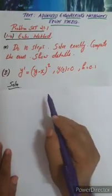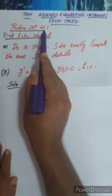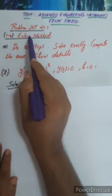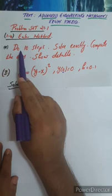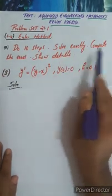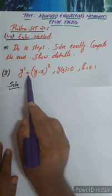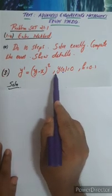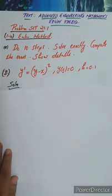In this video, we discuss a problem from the textbook Advanced Engineering Mathematics by Irwin Krasik. Problem set 21.1 by the Euler method. We have to do question 10 steps, solve exactly, compute the error, and show the details. I am doing the third problem: y' = (y - x)², y(0) = 0, h = 0.1.